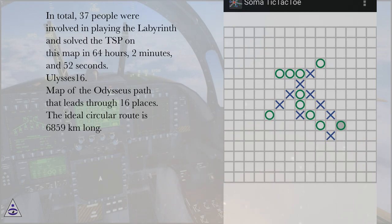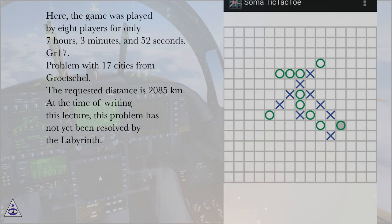Ulysses 16: Map of the Odysseus Path that leads through 16 places. The ideal circular route is 6,859 kilometers long. Here, the game was played by eight players for only 7 hours, 3 minutes, and 52 seconds.